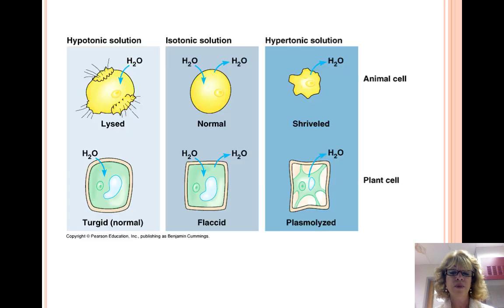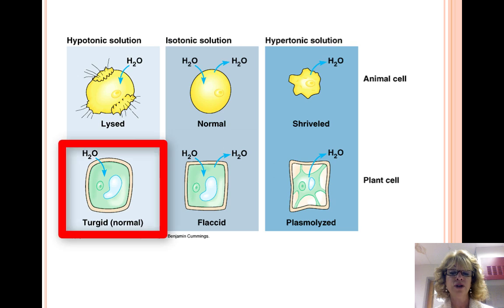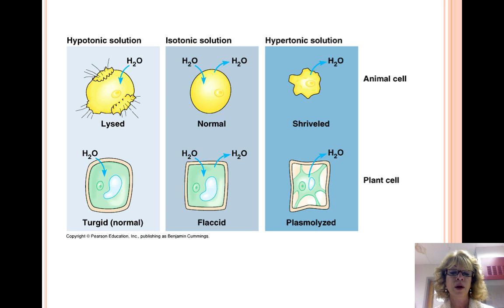Water balance is different in plant cells because of the cell walls. In isotonic conditions, plant cells are flaccid and the plant wilts. In hypotonic conditions, plant cells are turgid — pumped up — and the plants are the healthiest. To become turgid, a plant cell needs a net intake of water. The cell wall prevents it from taking in too much water and bursting.